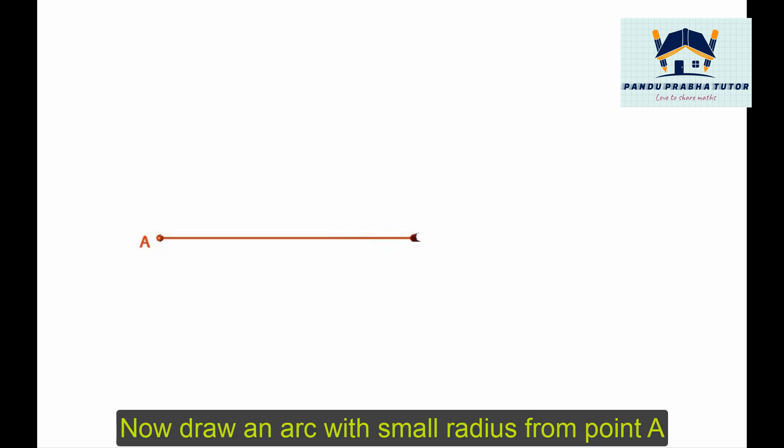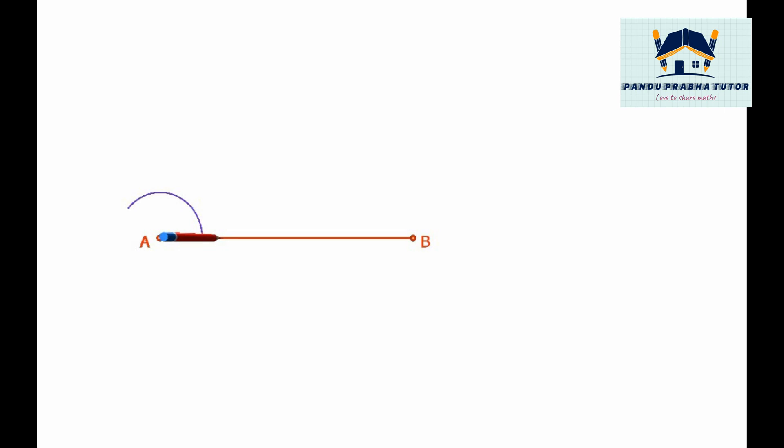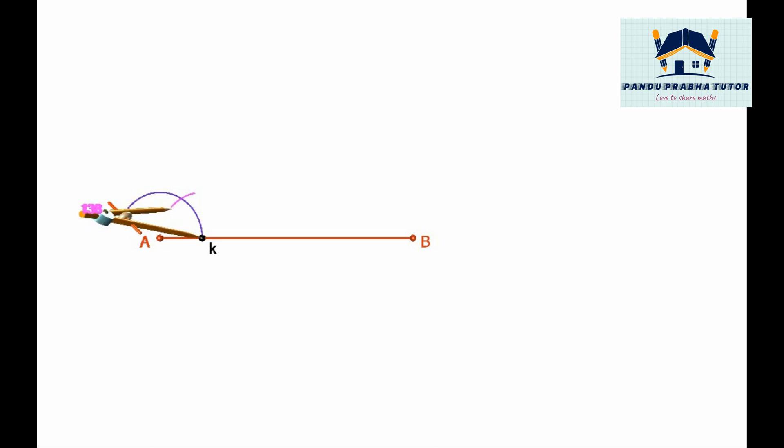Now draw an arc with small radius from point A. Mark the intersecting point as K. From point K, draw an arc which intersects the first arc without changing radius.